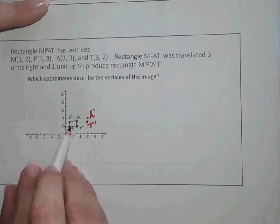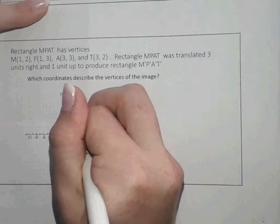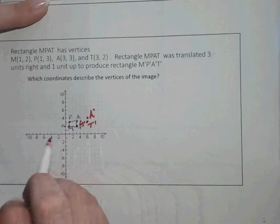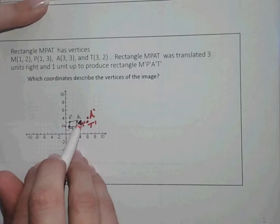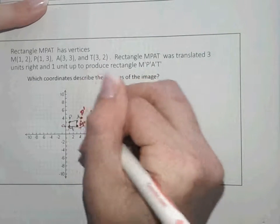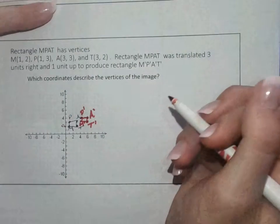Take M, move it one, two, three units to the right, and up one, and that does give me M-prime. And then P, one, two, three units to the right, and up one does give you P-prime. And you can draw the rectangle again.